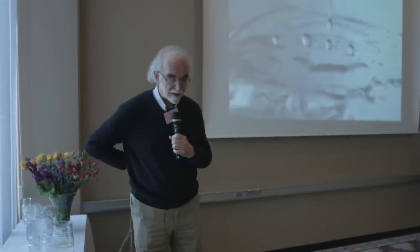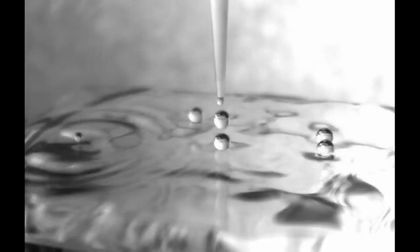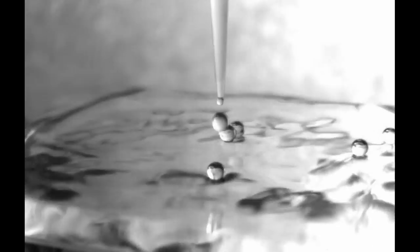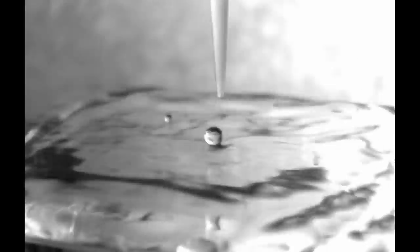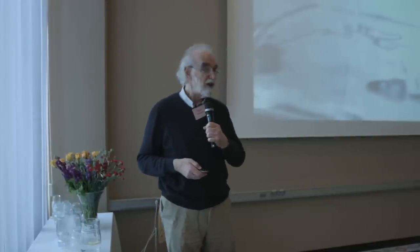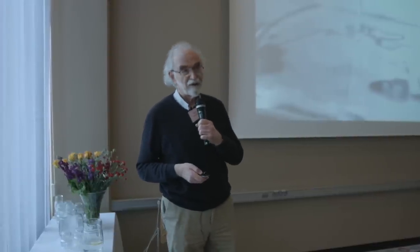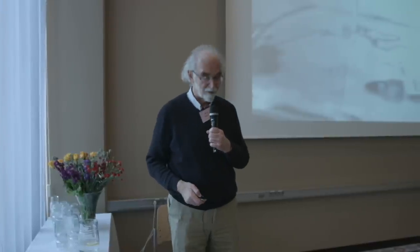Here's another anomaly to demonstrate that we really don't understand water. These are droplets of water floating on water. You don't expect droplets to float, so what's the explanation? I'm just trying to illustrate that although you may think you know everything there is to know about water, these are just a couple of examples of what I think you don't know.